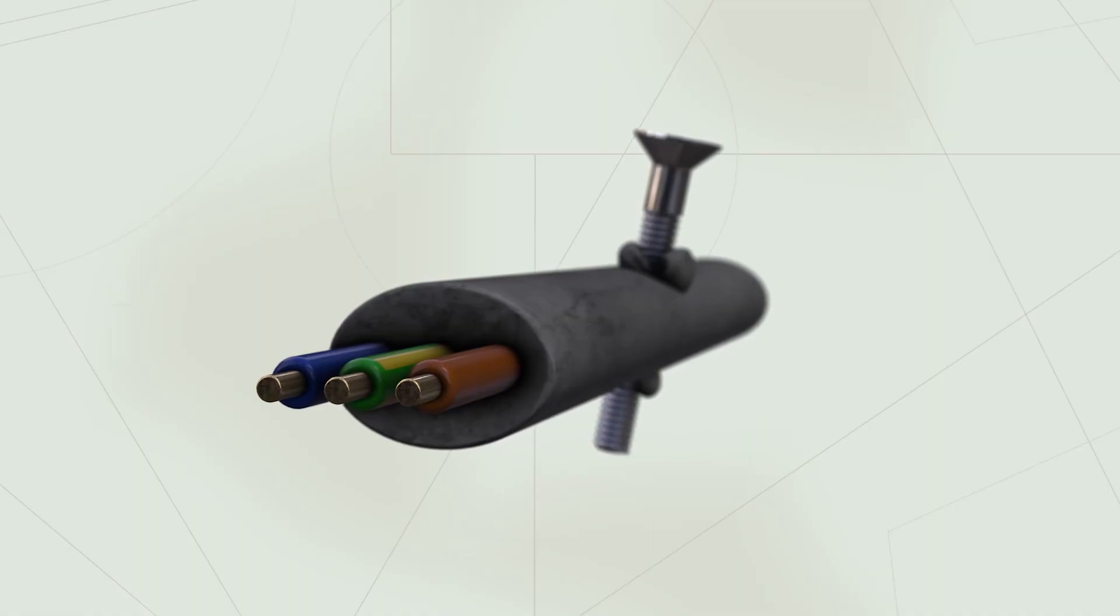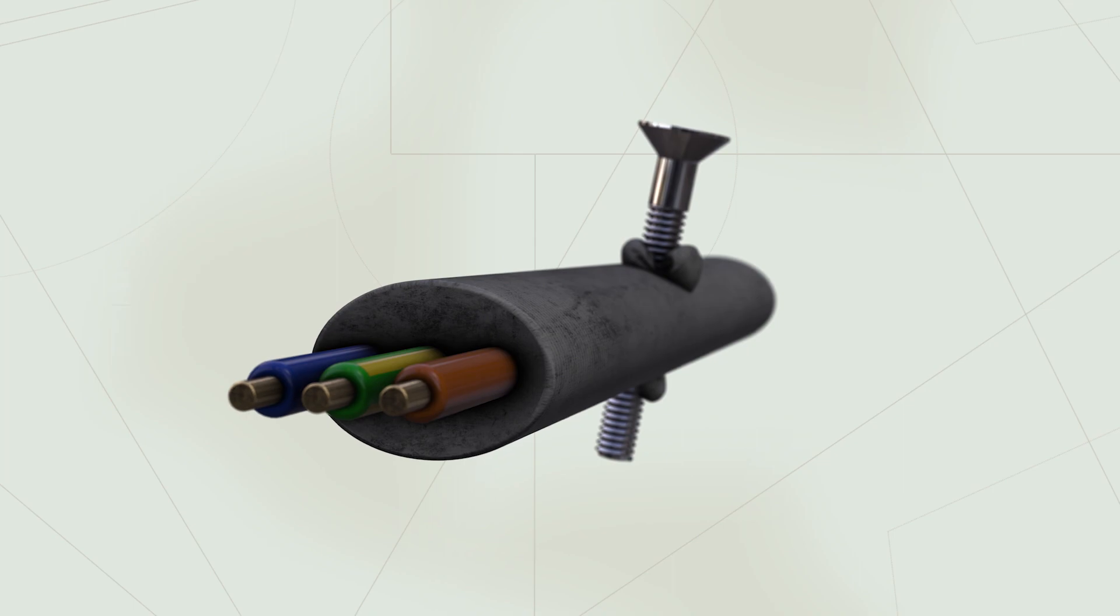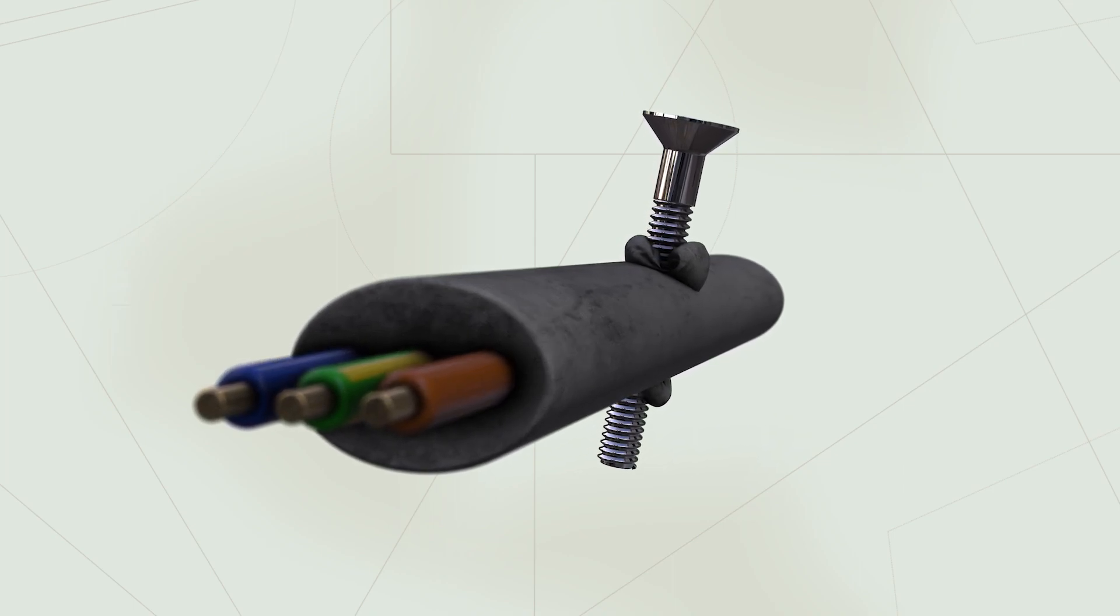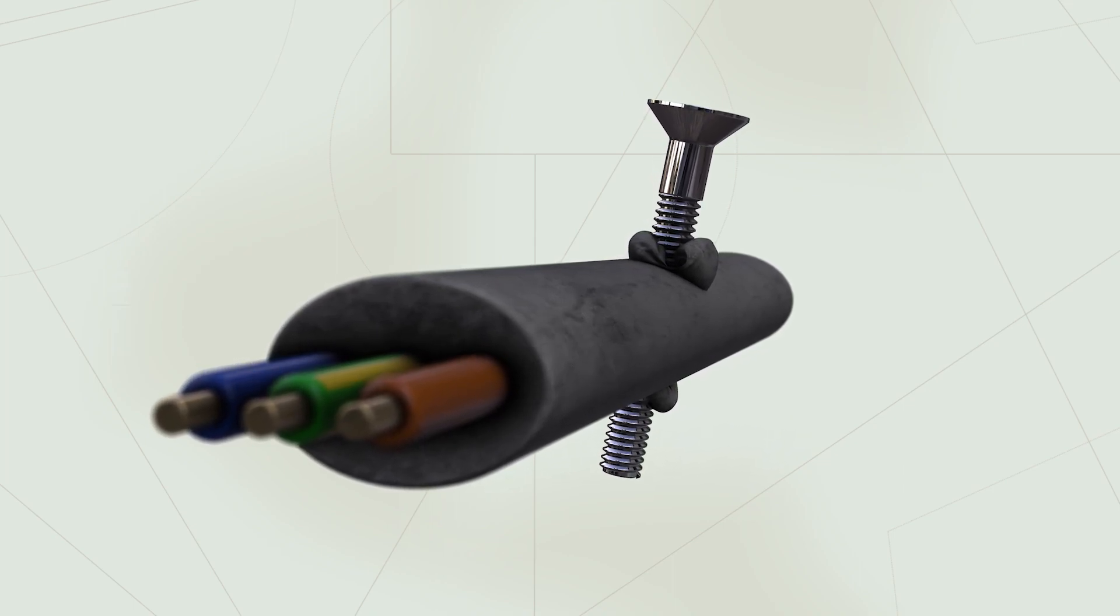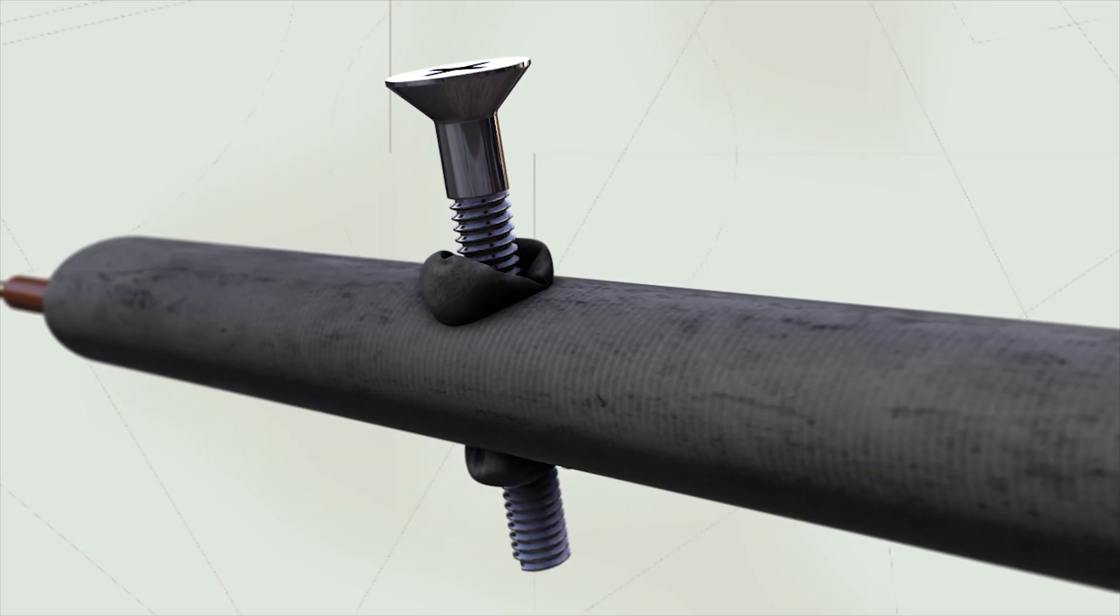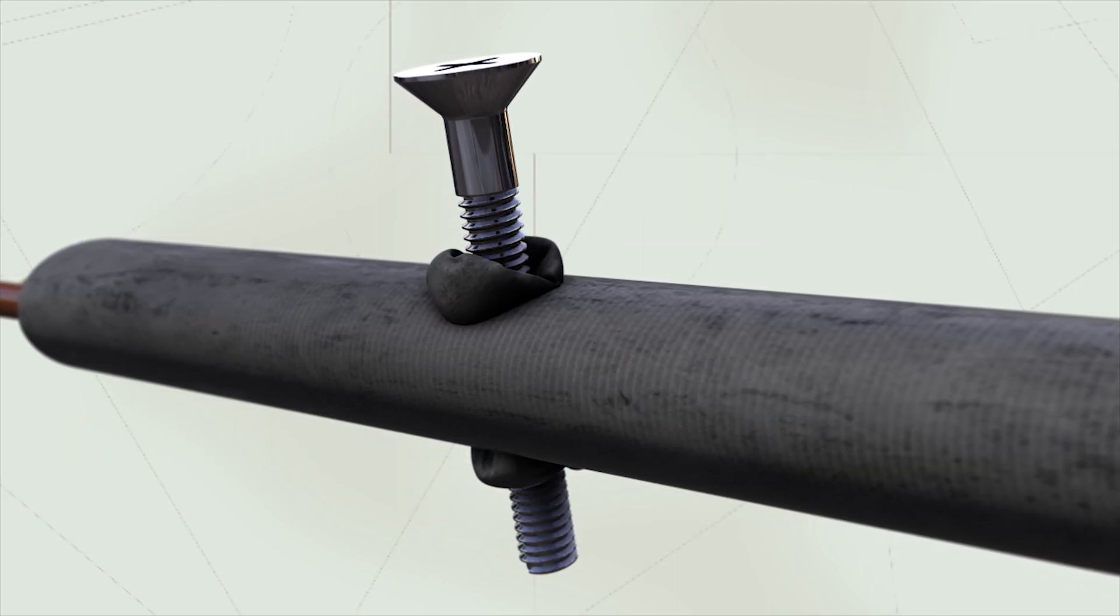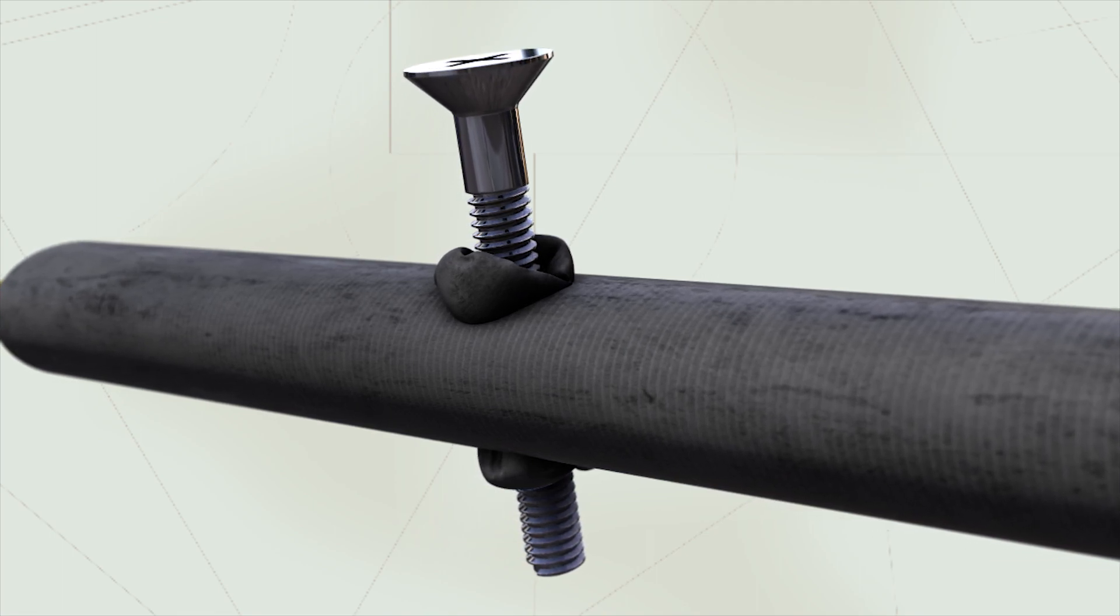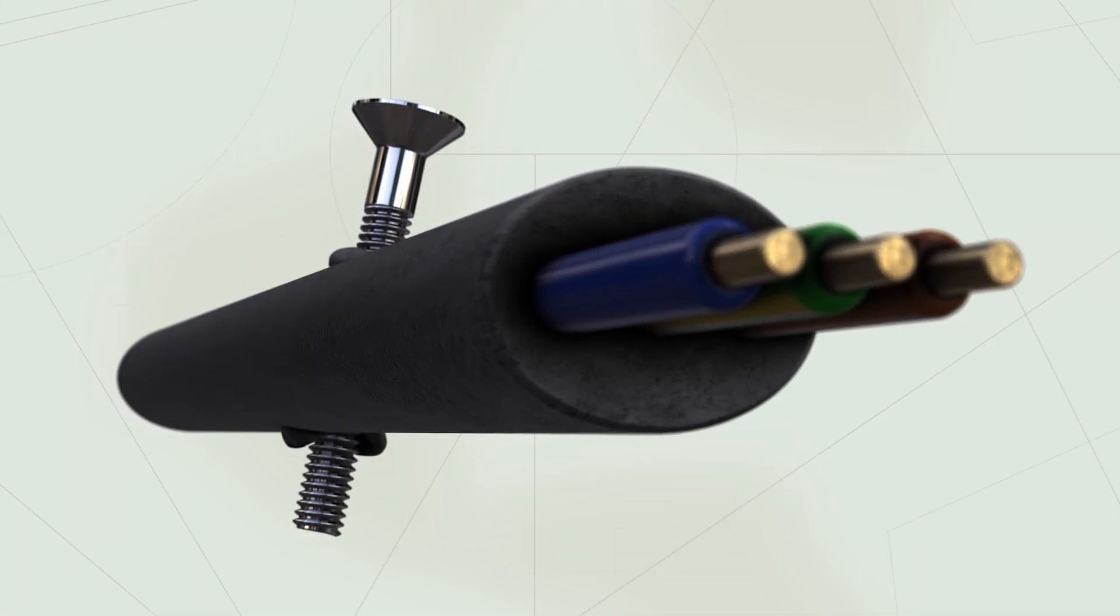Short circuit, a common fault normally caused by some form of mechanical damage to the cable, such as a screw or nail being driven through the conductors causing the live conductors to come into contact with one another or the CPC. This type of fault will in most cases operate the protective device immediately, whether it blows a fuse or trips a circuit breaker. A short circuit can be identified using a low ohms continuity test instrument.